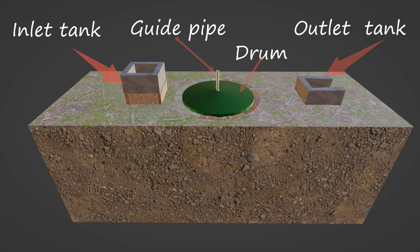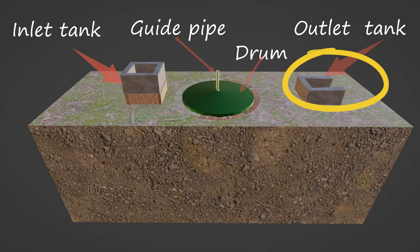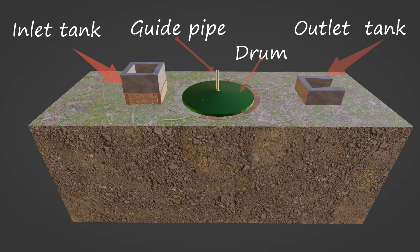Let us start with the 3D model of the floating drum biogas plant. You can see the top view here. This is an inlet tank used for slurry input — slurry is a mixture of cattle dung and water in a 1:1 ratio. Also visible is the outlet tank, from where slurry comes out after completing retention time. Retention time is the average length of time a substance stays in a reactor or digester. We can also spot the gas holder along with the guide pipe — the gas holder stores the gas.